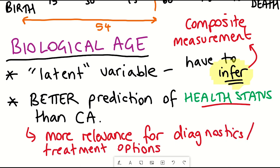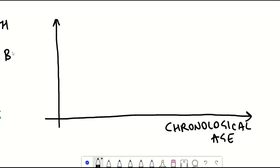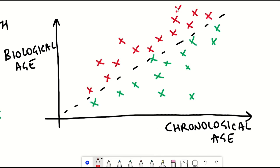And so naturally chronological age and biological age will correlate and so therefore chronological age can be used to evaluate how good these different aging clocks are.